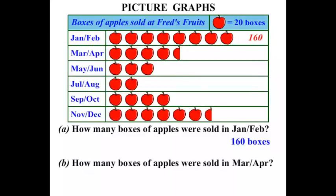Part B: how many boxes of apples were sold in March-April? Each apple is worth 20 boxes, but you can see there that we haven't got a full apple — we've got half an apple. So if a whole apple is worth 20 boxes, half an apple will be worth 10 boxes. Counting: 20, 40, 60, 80, and that half apple is worth 10 more. So 80 plus 10 is 90 boxes for the March-April period.